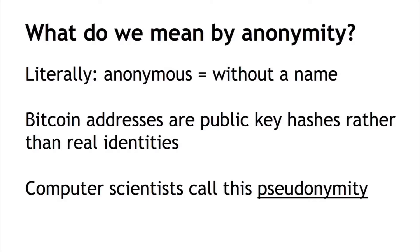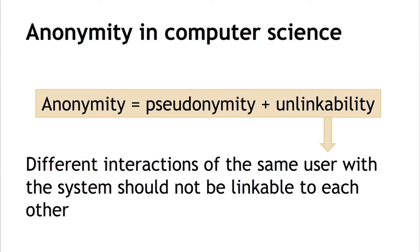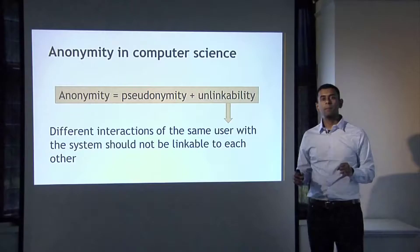You might wonder: even though you're using a pseudonym — your public key hash — you can create any number of them. You can have as many pseudonyms as you want. Does that make it anonymous? The answer is not quite. Anonymity in computer science is pseudonymity together with unlinkability. What unlinkability means intuitively is that as a user interacts with a system repeatedly, these different interactions should not be able to be tied to each other from the point of view of some adversary.